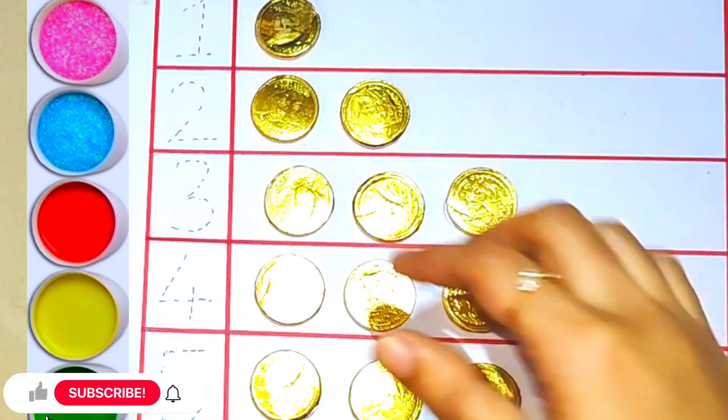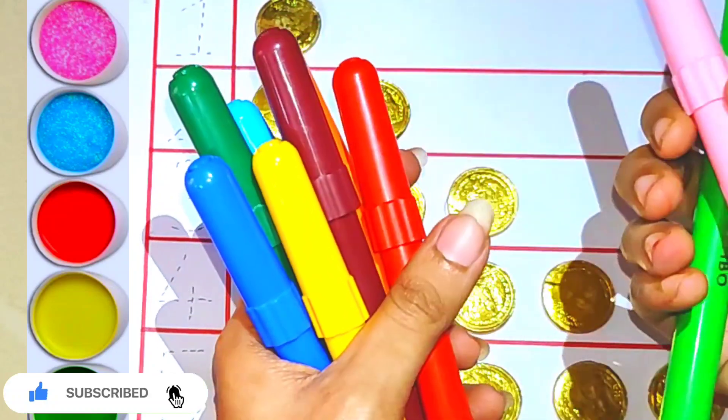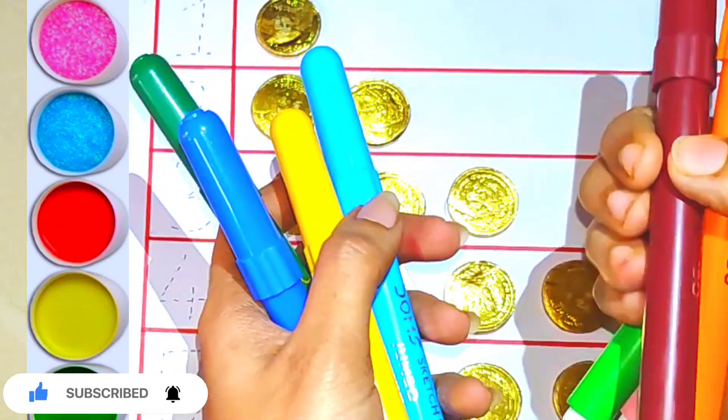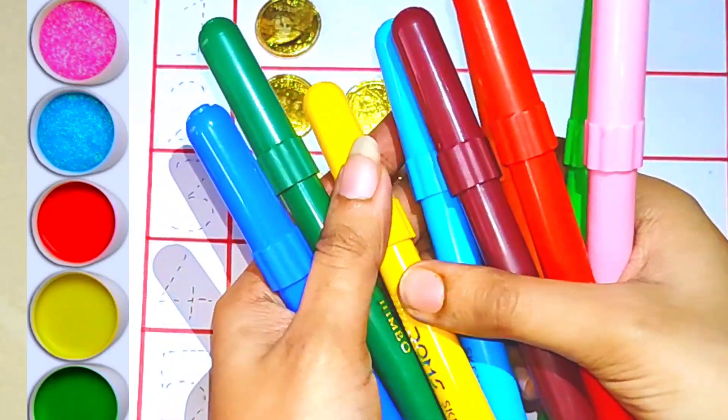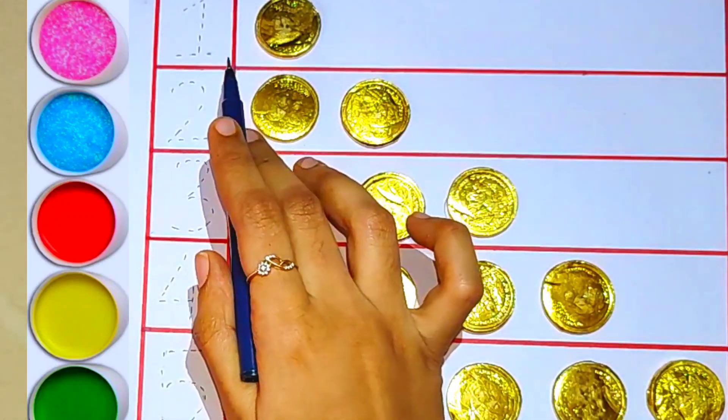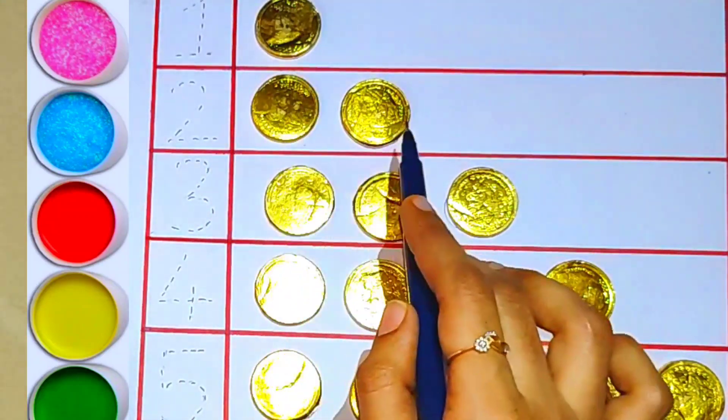Hello children, let's learn some colors like green color, pink color, red color, orange color, brown color, light blue color, yellow color, dark green color, dark blue color. In this video, let's learn the numbers and let's count the coins.